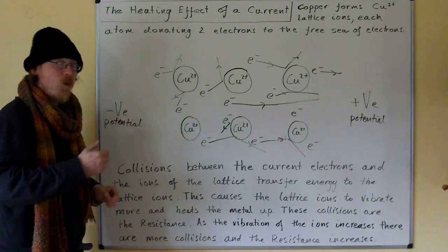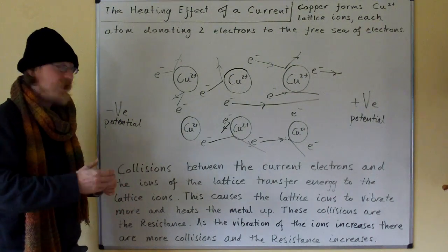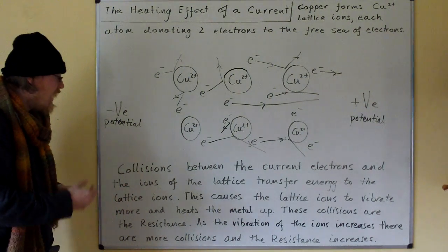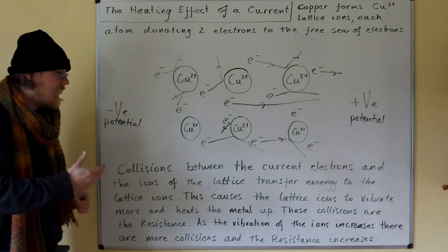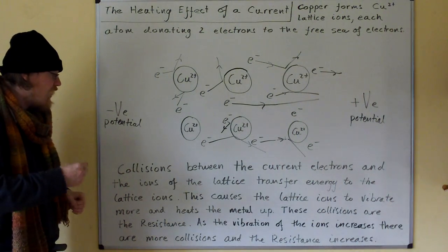But these electrons collide with the lattice ions, which heats up the material. This causes the lattice ions to vibrate more and heats the metal up. These collisions are the resistance.